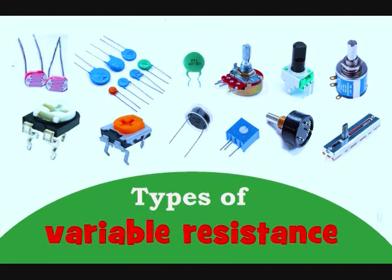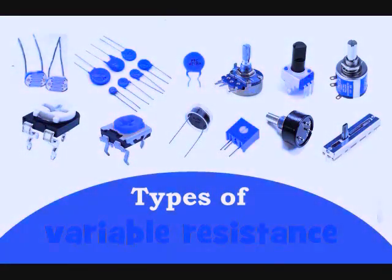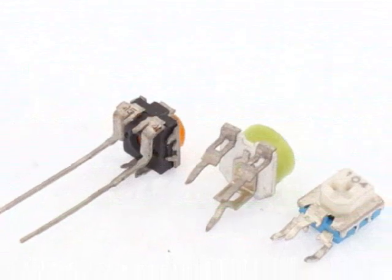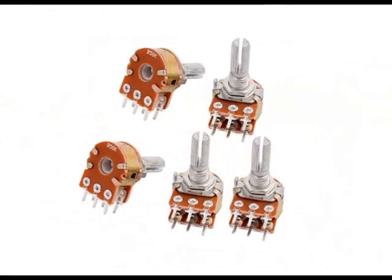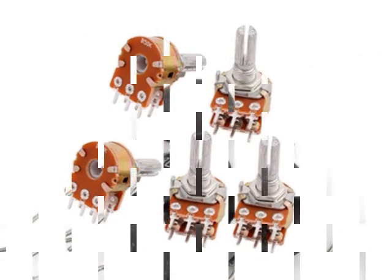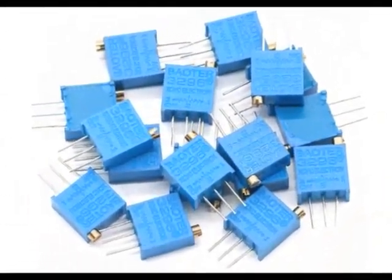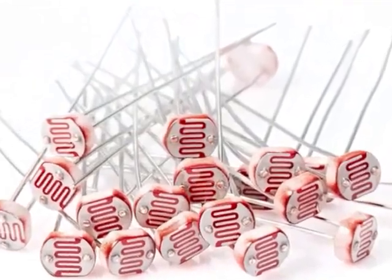Types of Variable Resistance. Variable resistors are resistors whose value can be changed in the circuit. Unlike fixed resistors, which have discrete values, the value of these resistors can be any number. Variable resistors are divided into two categories: independent resistors and dependent resistors.